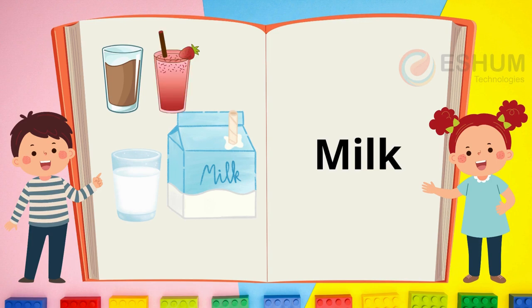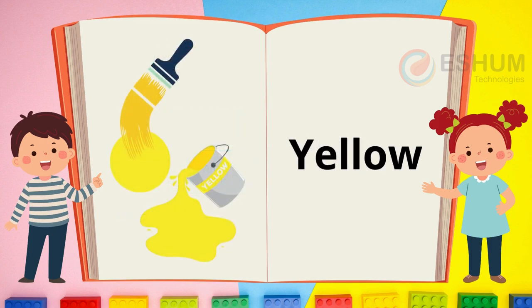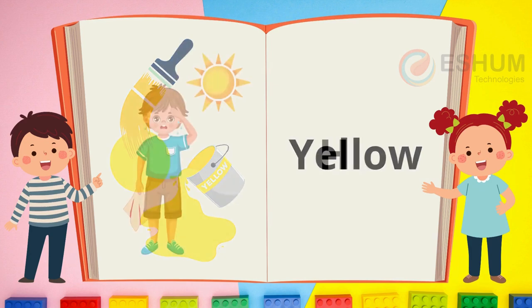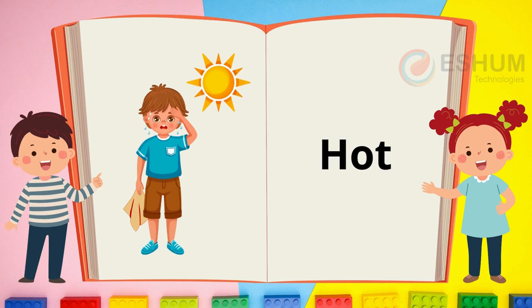Do you like milk? What milk do you like? Yellow. The color you see in the picture is yellow. The brush paints something yellow. What is something that's yellow?